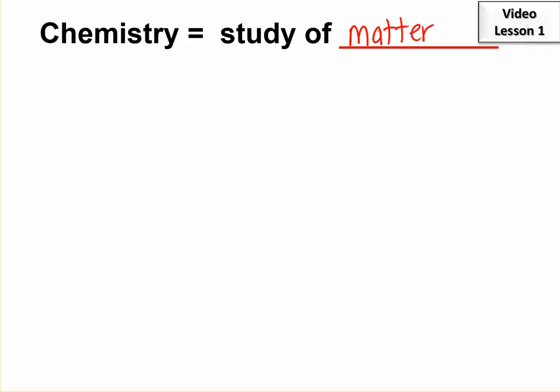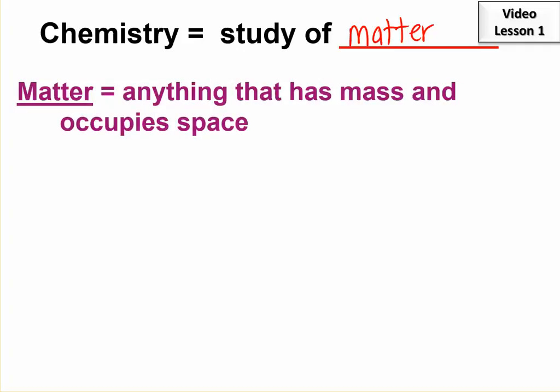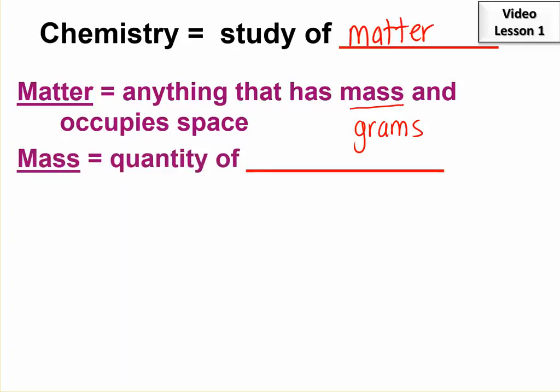And you know what matter is. It's anything that has mass and occupies space. Mass, we measure in grams—it's the basic unit. And mass is actually the quantity of matter. So if you want to know how much matter something contains, you put it on a balance and get its mass.